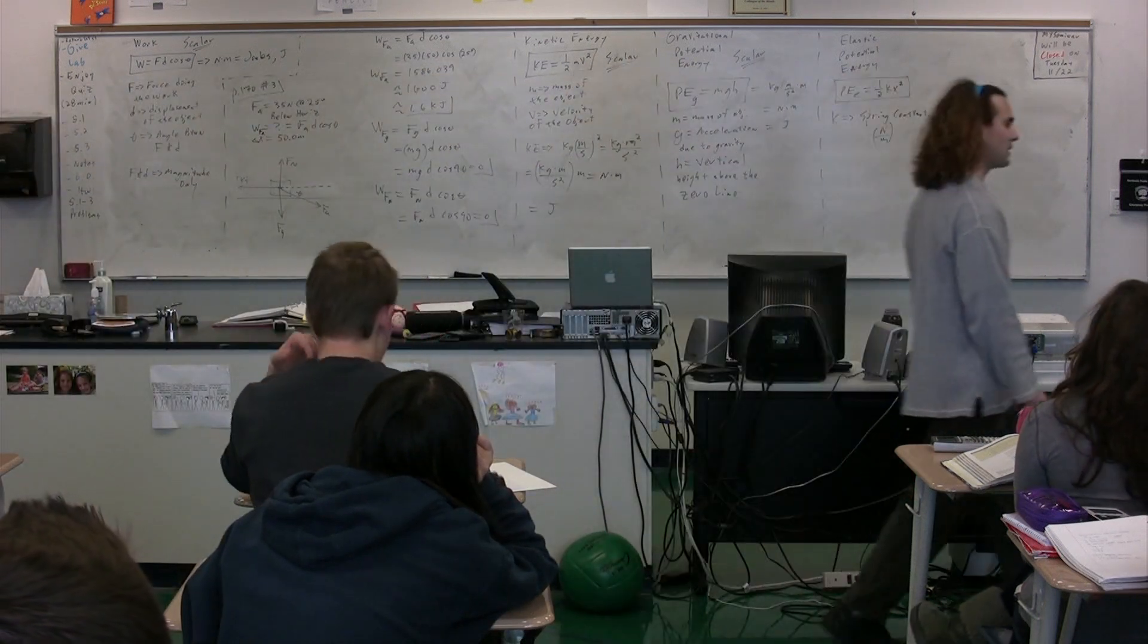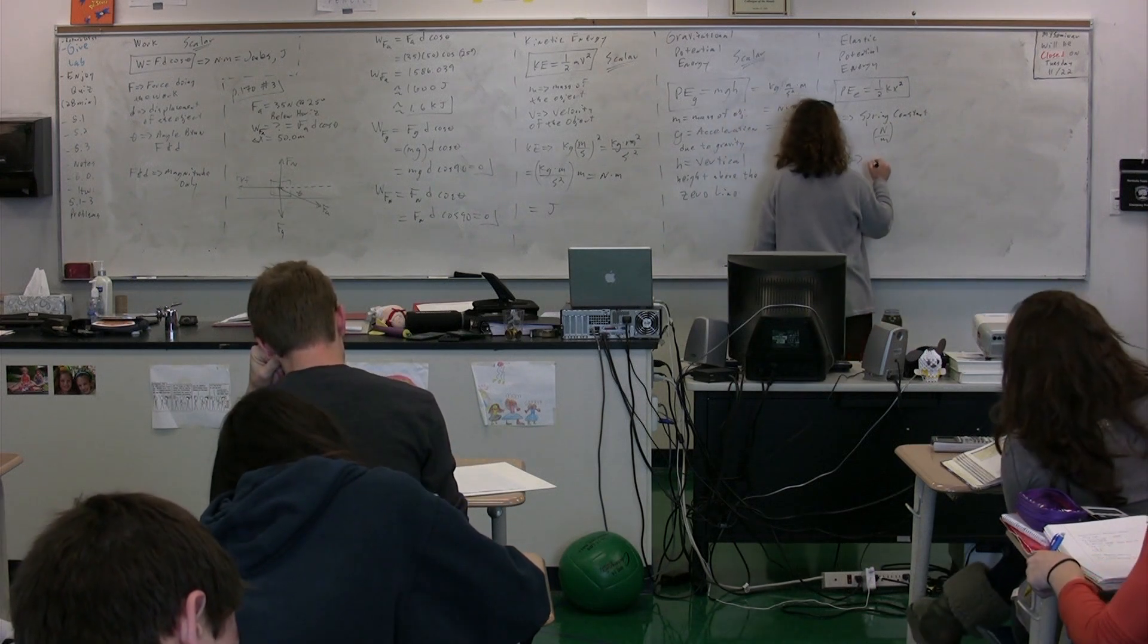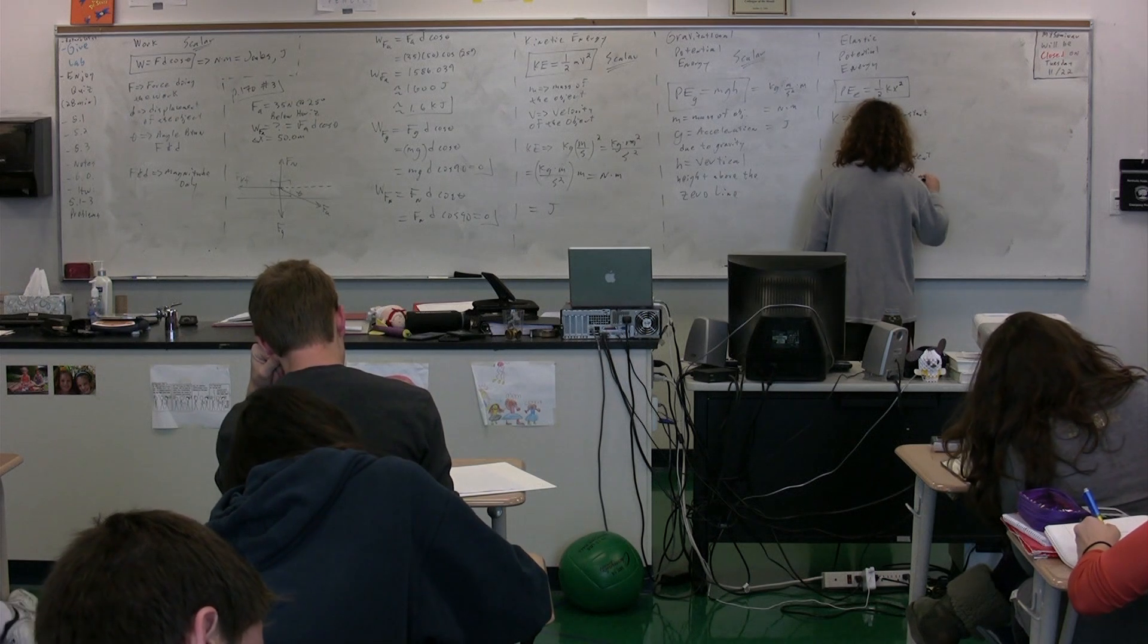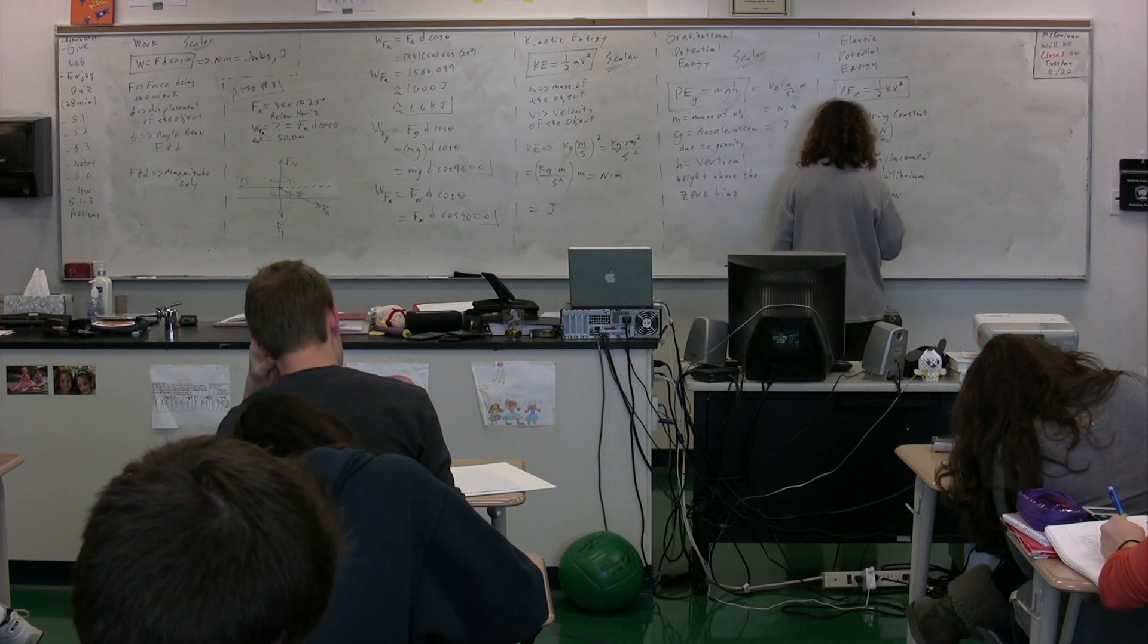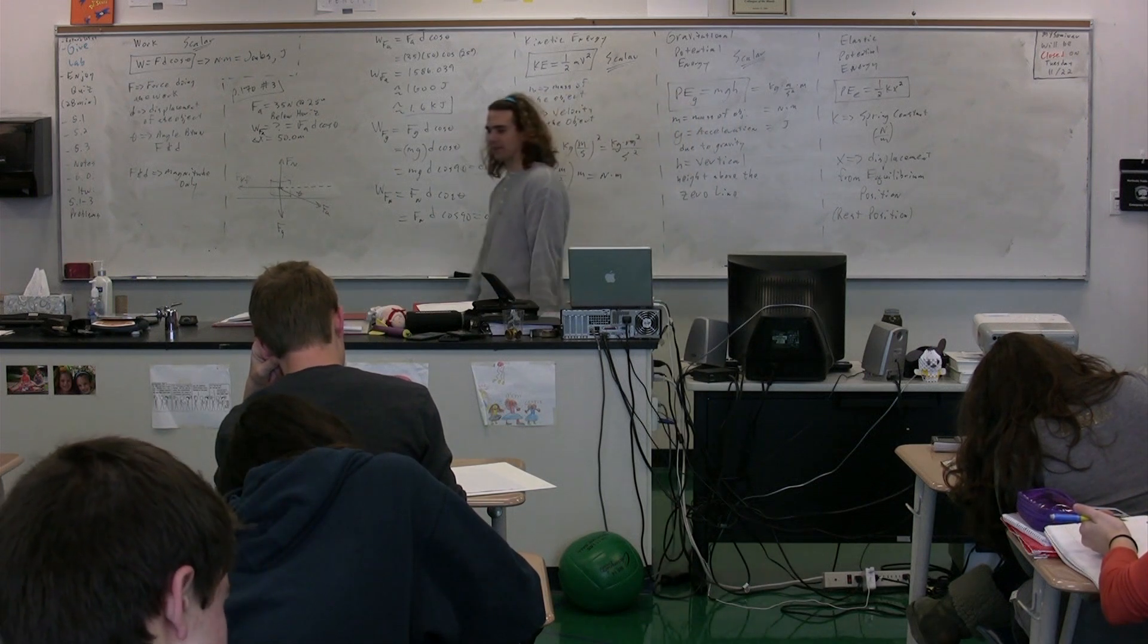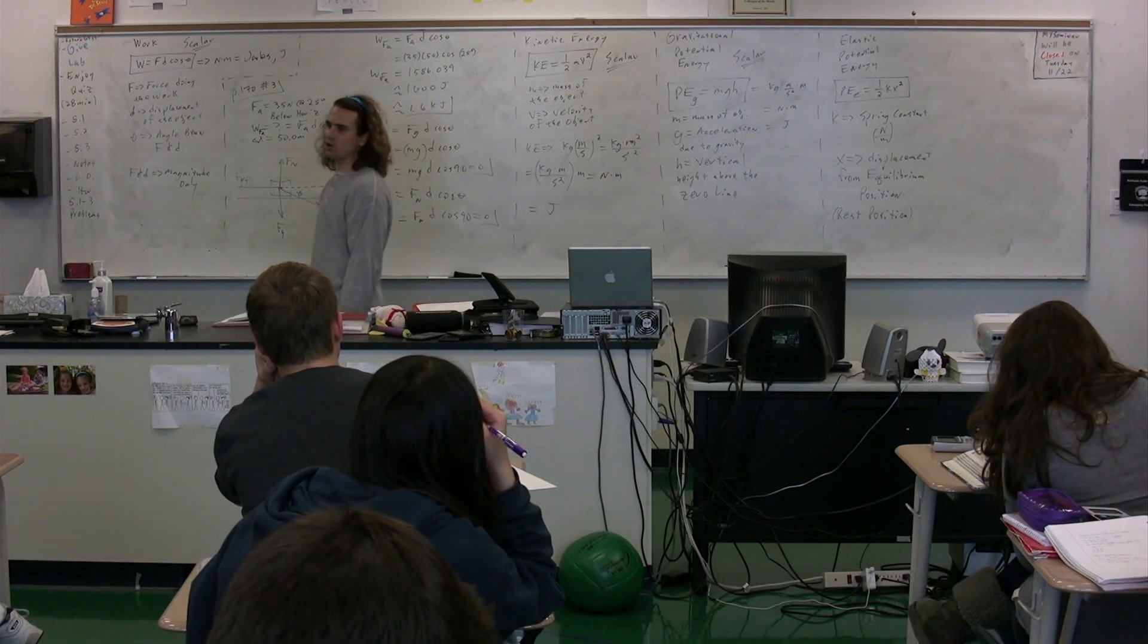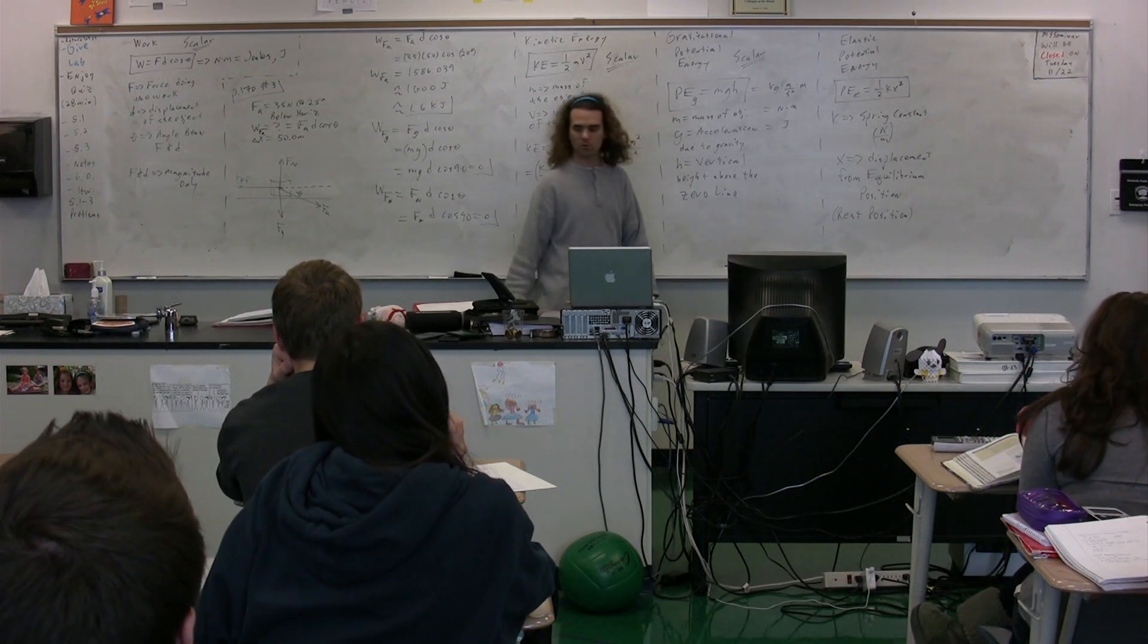X in this equation is the displacement from the equilibrium position. The equilibrium position is also sometimes called the rest position. You will hear me actually refer to it as both. I'll go back and forth between rest position and equilibrium position, because they really do mean the same thing. Basically, it is the location at which the spring would be in equilibrium, if there's no forces acting on it, which means it's also going to be at rest.